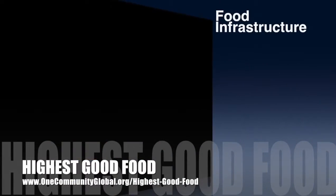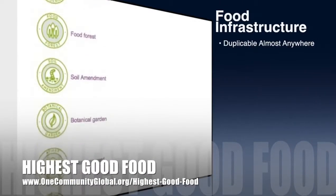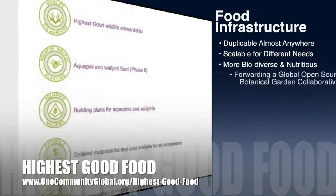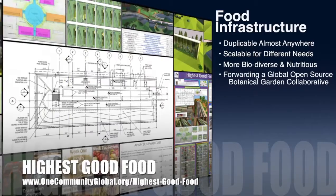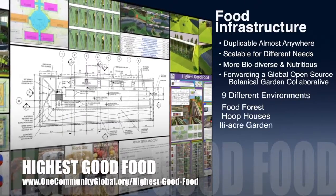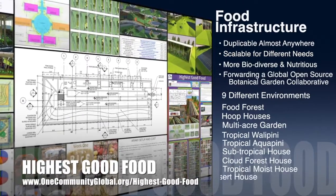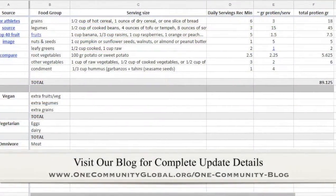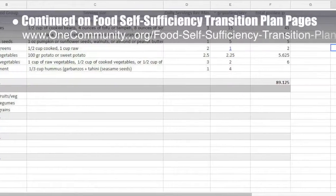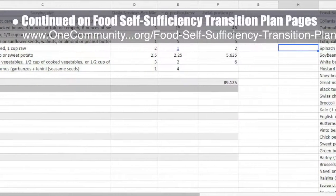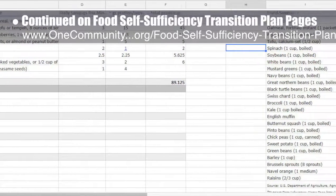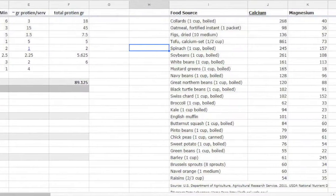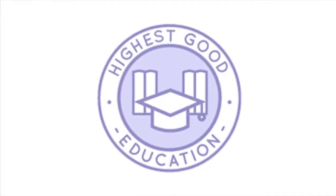One Community's approach to highest good food is duplicable almost anywhere, scalable for different needs, more biodiverse and nutritious, part of forwarding a global open source botanical garden collaborative, and includes nine different free-shared and duplicable growing environments. This week the core team continued work on the formulas and data for the food calculations on the food self-sufficiency transition plan pages, bringing it to approximately 90% completion, as you can see here.